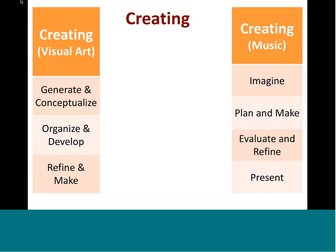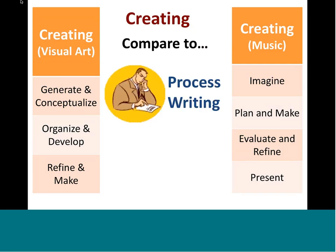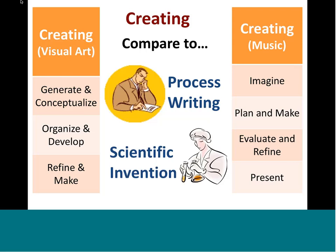Here's an example of creating in two art forms — visual arts and music. These process components are actually very familiar to other educators. If they understand process writing, this is very much like process writing. Scientists should also recognize this — it's the process that Edison used to invent the light bulb, beginning with imagining: what am I trying to do? What are some possibilities? Then experimenting, exploring, and finally making.